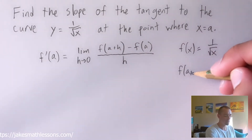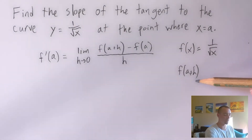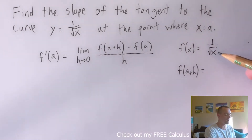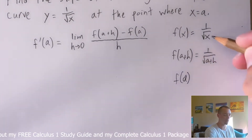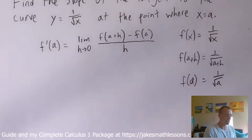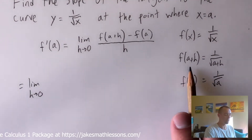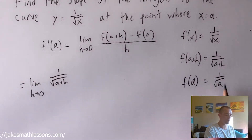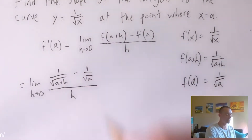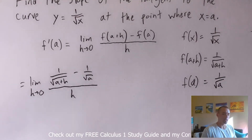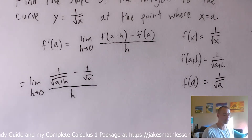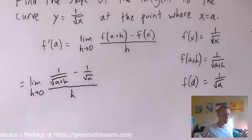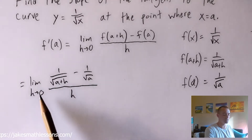To find f of a plus h, we just replace any x's in f of x with a plus h. Similarly, to find f of a, we replace x with a. So now we're trying to find this limit as h goes to zero of f of a plus h minus f of a — which is one over root a — all over h. If we can find this limit, that's going to tell us the slope of our tangent line at the point x equals a.